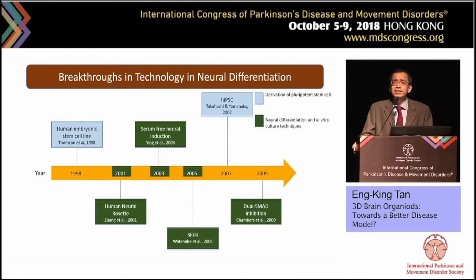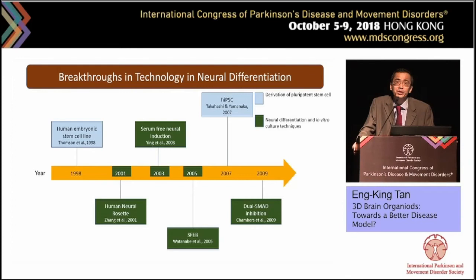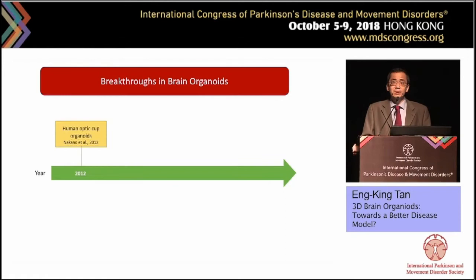A couple of years later, Chambers and colleagues found that dual SMAD inhibition — essentially inhibiting the formation of mesoderm and endoderm — could increase neural rosette formation in vitro up to 70%, essentially allowing the ability to scale up production of these structures.